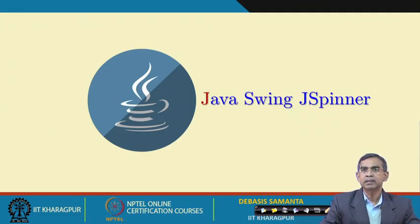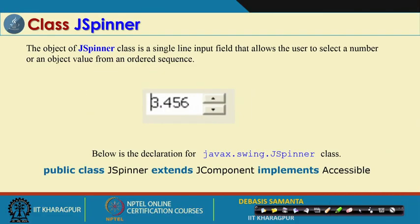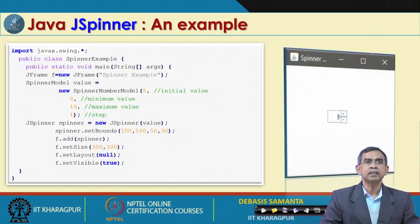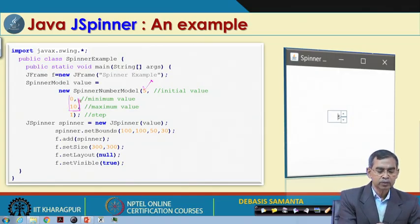JSpinner is similar to the slider, but here numerical values can be defined in a continuous or discrete range. It looks like the font size selector in Microsoft Word — if you keep clicking, the value automatically increases, and when you release, that value is selected. It has two constructors and two methods. In the example, the JSpinner is displayed with an initial value of 5 and a range of 0 to 10.